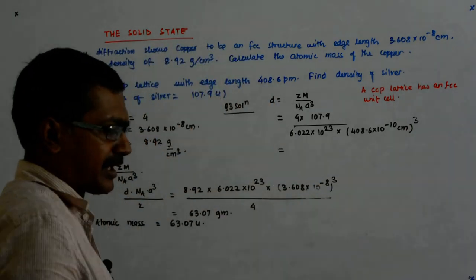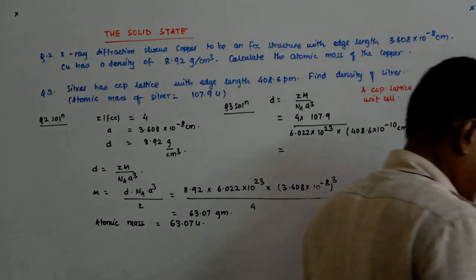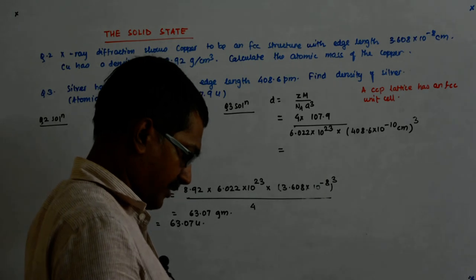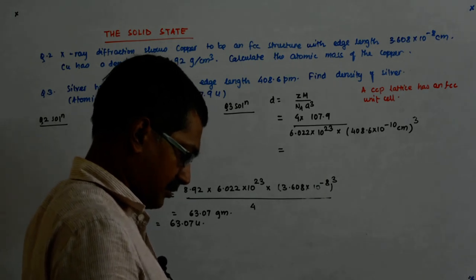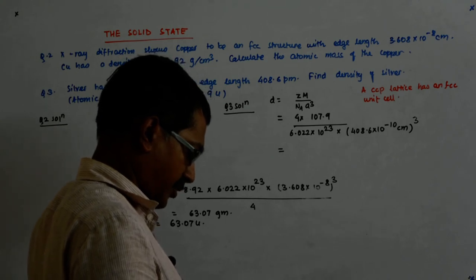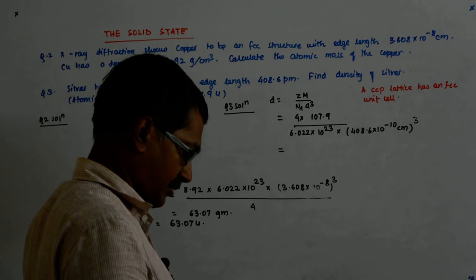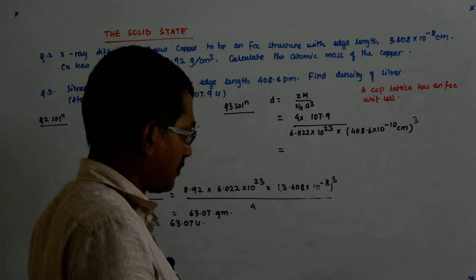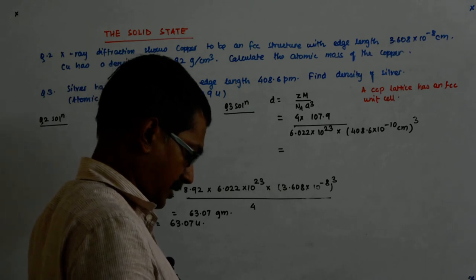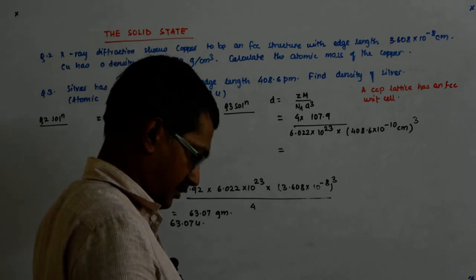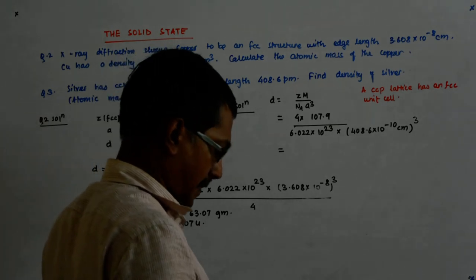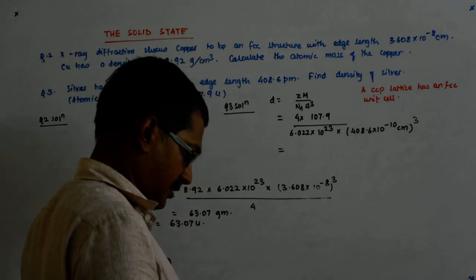So, you should be careful about that. I will again be using the calculator. So, I have 4 into 107.9 divided by 6.022 to the power 23 into 408.6 into 10 to the power minus 10 to the power 3.